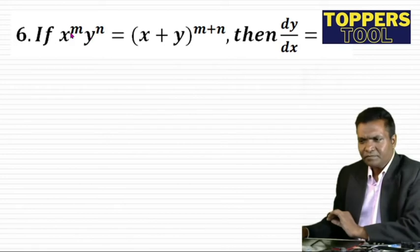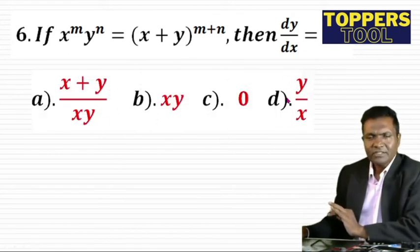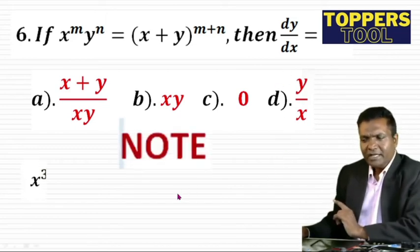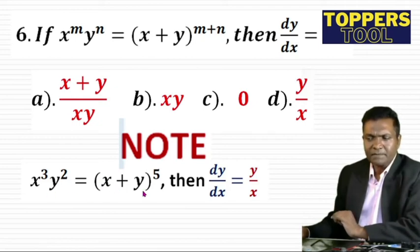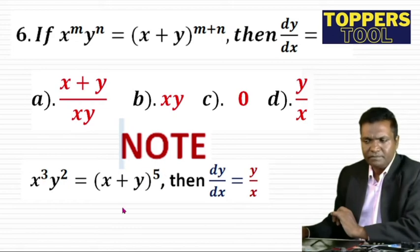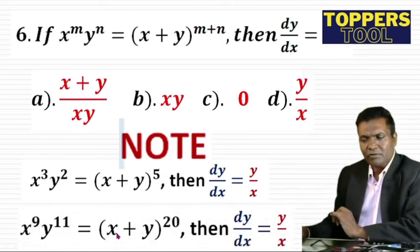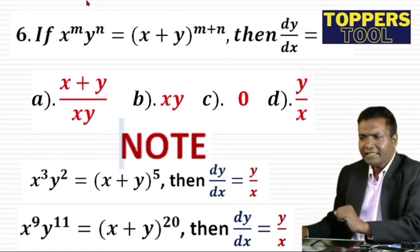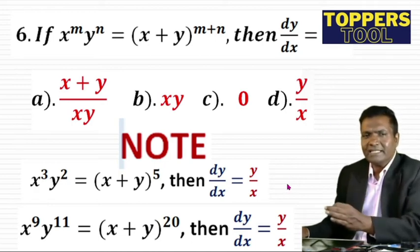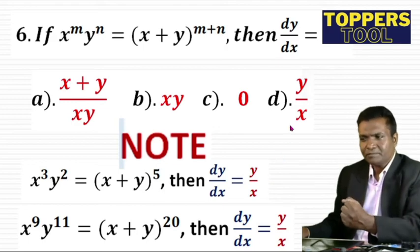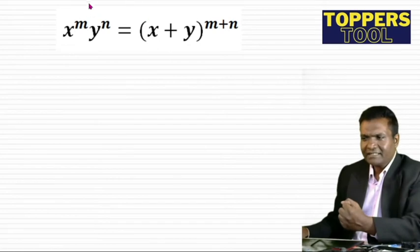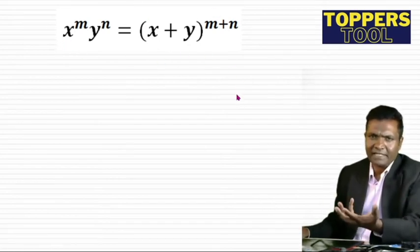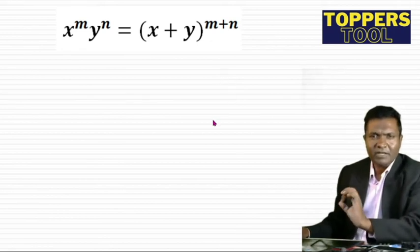For example, if it's x³y² = (x+y)^5, you will always get dy/dx = y/x. Similarly x^9 · y^11 = (x+y)^20, the result is still dy/dx = y/x. You have to remember this result. Let's prove it using logarithms.